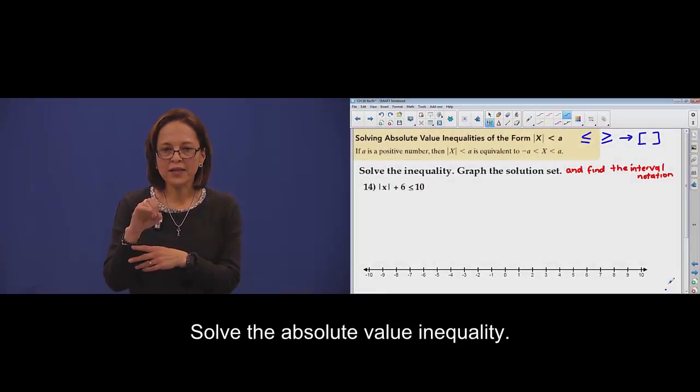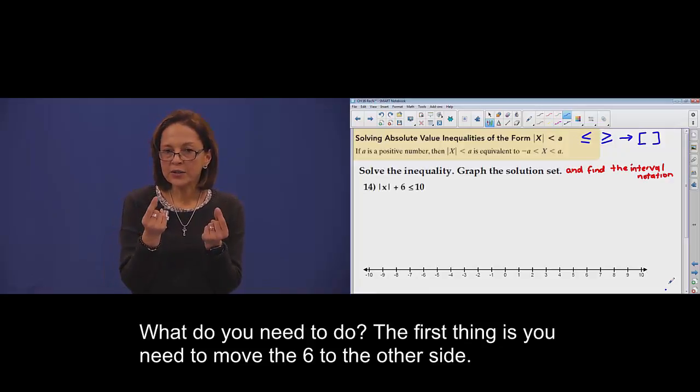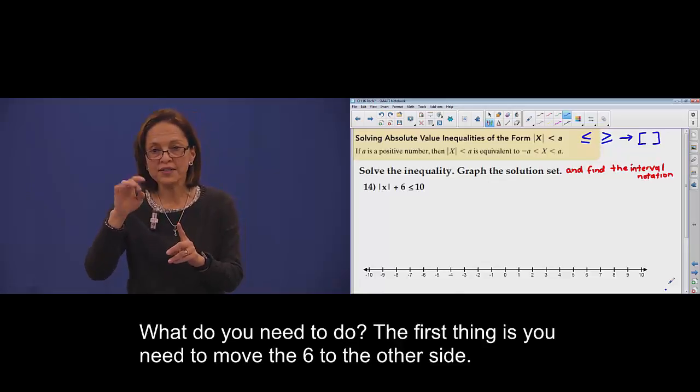Solve the absolute value inequality. What you do, first thing you must move the plus 6 to the other side.